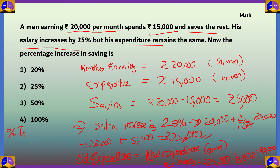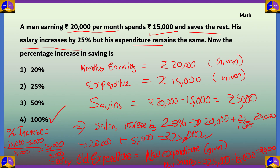Percentage increase in saving = (increase in saving / original saving) × 100 = (10,000 − 5,000) / 5,000 = 5,000 / 5,000 = 100%. So option 4, 100%, is the correct answer — after the 25% salary increase, the man gets twice the savings he had originally.